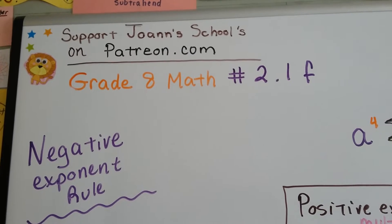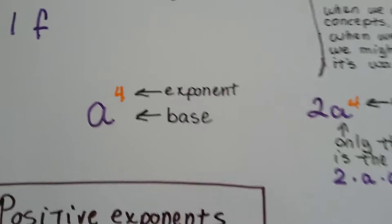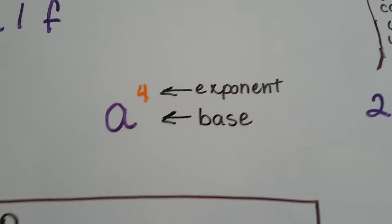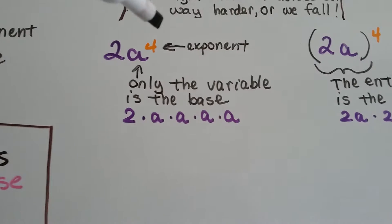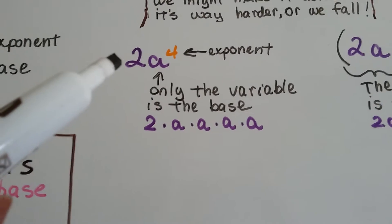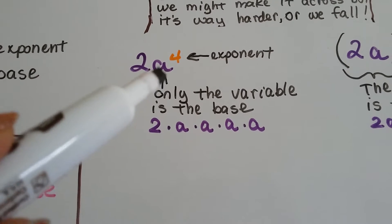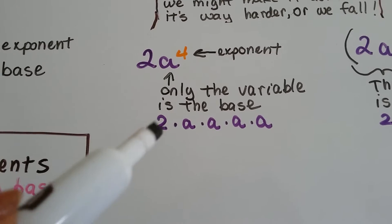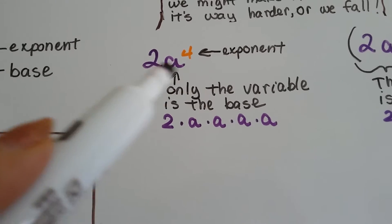Grade 8 math number 2.1f, the negative exponent rule. I'm going to go over this really quick with you again. This little orange 4 is the exponent, and the a would be the base. In this one, the little orange 4 is the exponent, and only the a is the base. The 2 is a coefficient that's just kind of coming along for the ride. Only this a is the base. So this would be 2 times a times a times a times a, because remember when they're next to each other, that means multiplication.